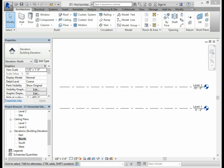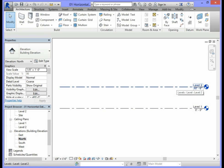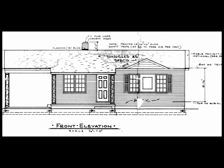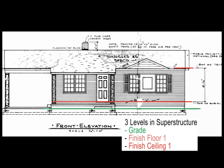In the North Elevation, you should already see two levels: Level 1 and Level 2. Looking at the elevation, one line represents the Grade, another line represents the Finish Floor 1, and another line represents the Finish Ceiling.